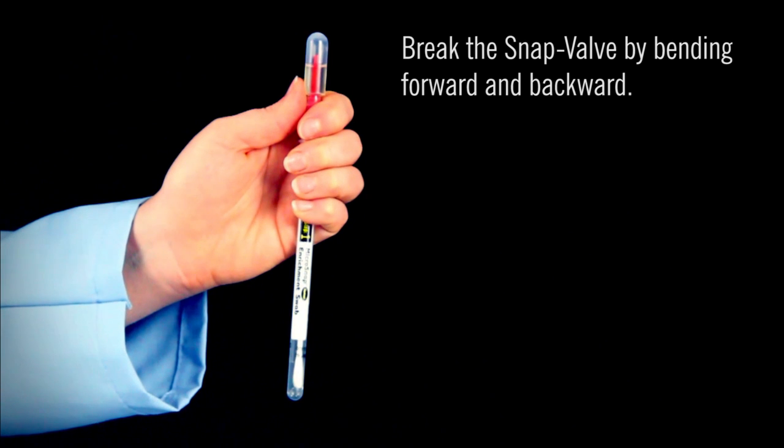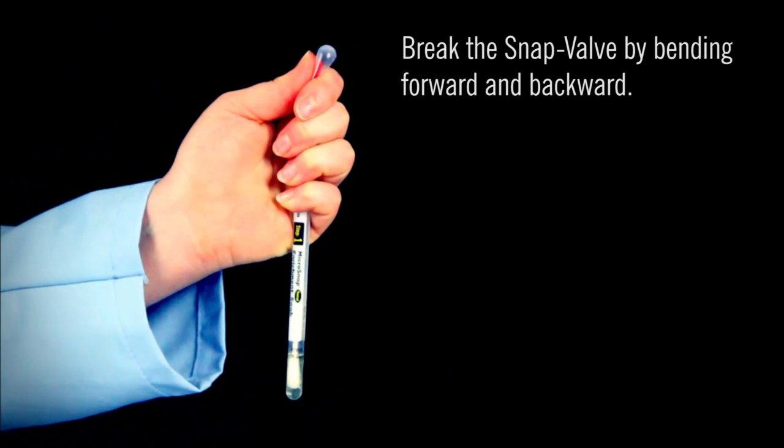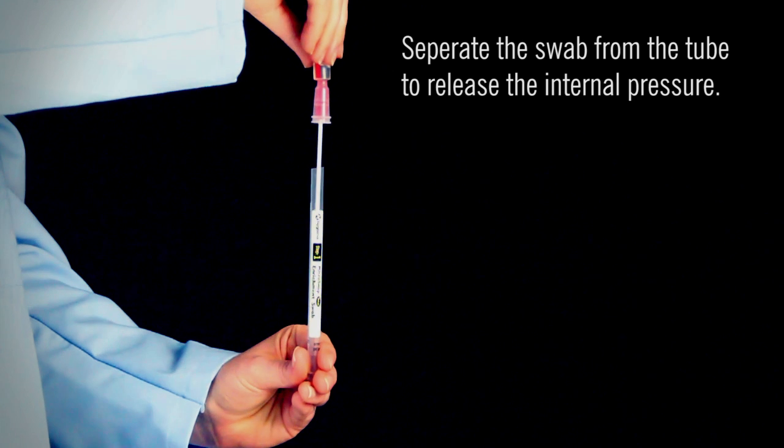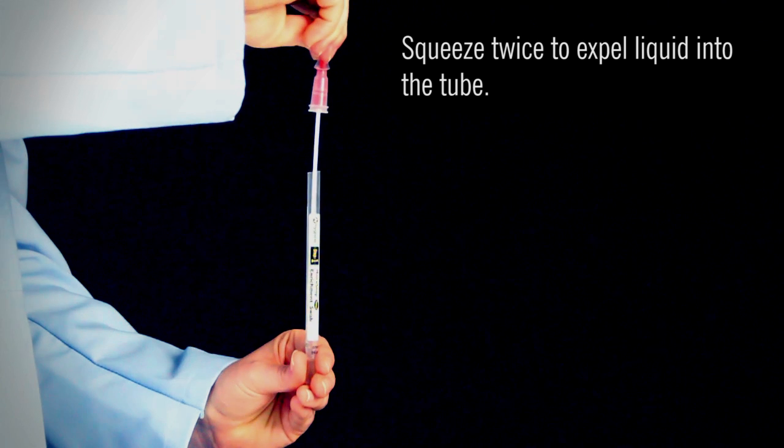Hold the device in your fist and use the thumb and forefinger to break the snap valve by bending the bulb forward and backward. Separate the swab from the tube to release the internal pressure and squeeze the bulb twice to expel liquid into the tube.